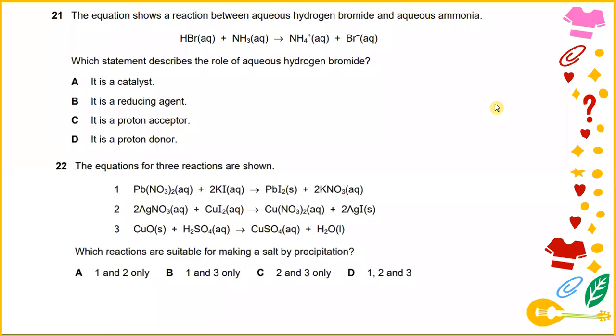Question number 21. The equation shows a reaction between aqueous hydrogen bromide and aqueous ammonia. Which statement describes the role of aqueous hydrogen bromide? The answer is it is a proton donor.